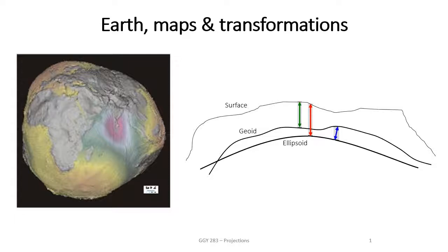Why is this important? In mapping, if you want to create that abstract representation of reality that is a map, you have to be able to transform the earth and what is on the earth onto that map. That is done through mathematical algorithms and quite a bit of statistics and artistry as well. So we need to know how to represent the earth as it actually is in reality in the form of a mathematical construct.